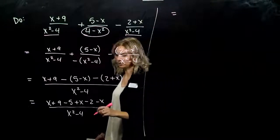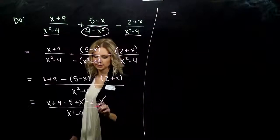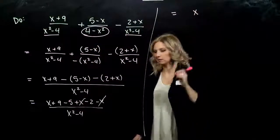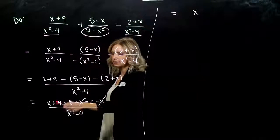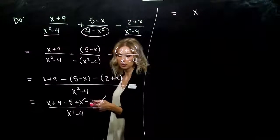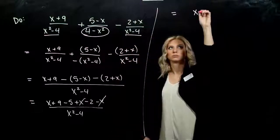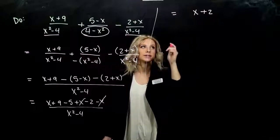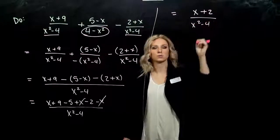Let's combine like terms. How many factors of x do we have? I've got one positive, one negative, so I'm left with 0. And our constants. What do we have? 9 minus 5 gives me 4, minus another 2. So I'm left with positive 2.